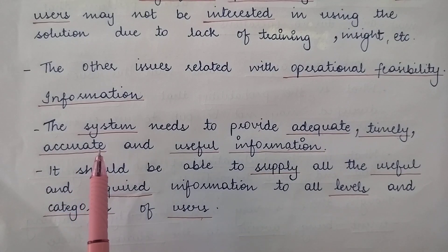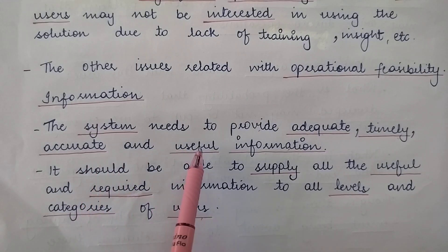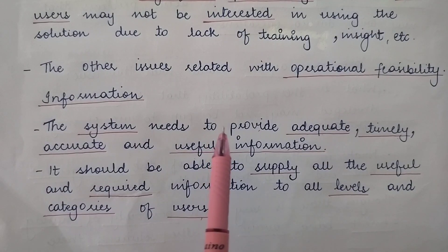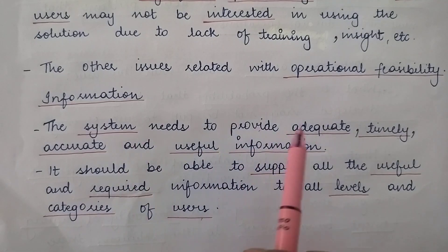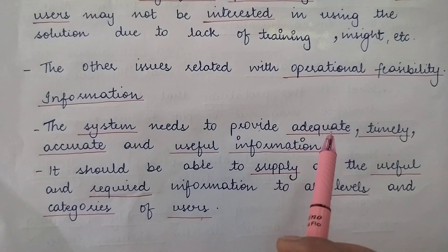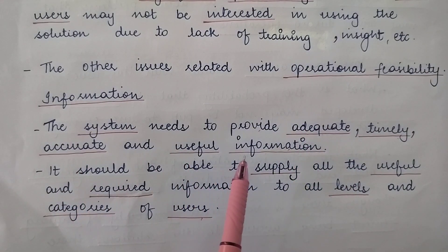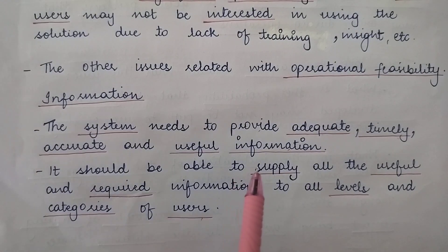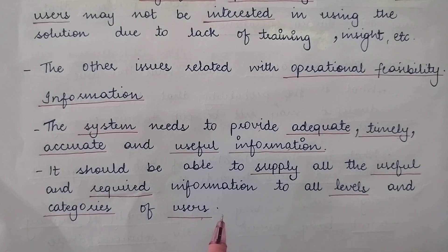So it should provide adequate, timely, and accurate information — whatever information is being provided must be accurate — and also it should be useful. If the information provided is not relevant to the people it is being provided to, then it serves no purpose. Hence, all these factors should be considered. It should be adequate, timely, accurate, and useful. Also, it should supply all the useful and required information to all the levels and categories of users — from top management down to the operational level.